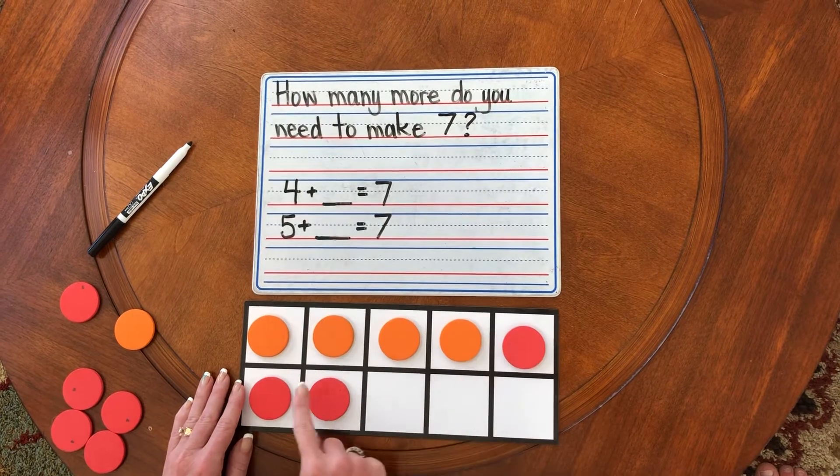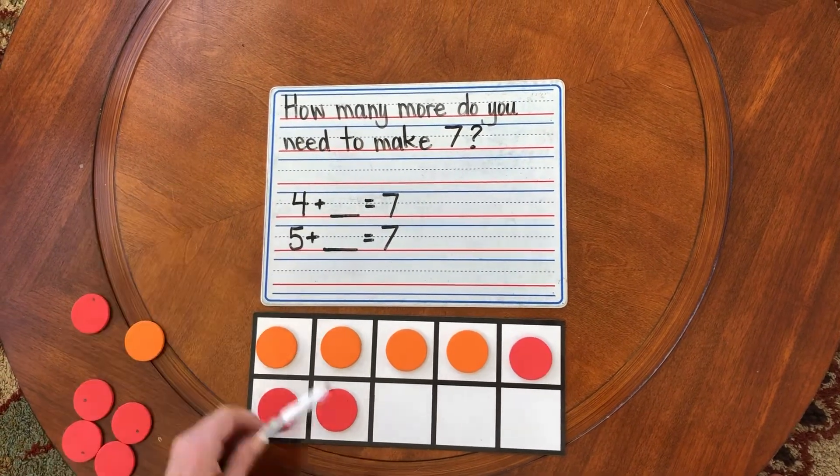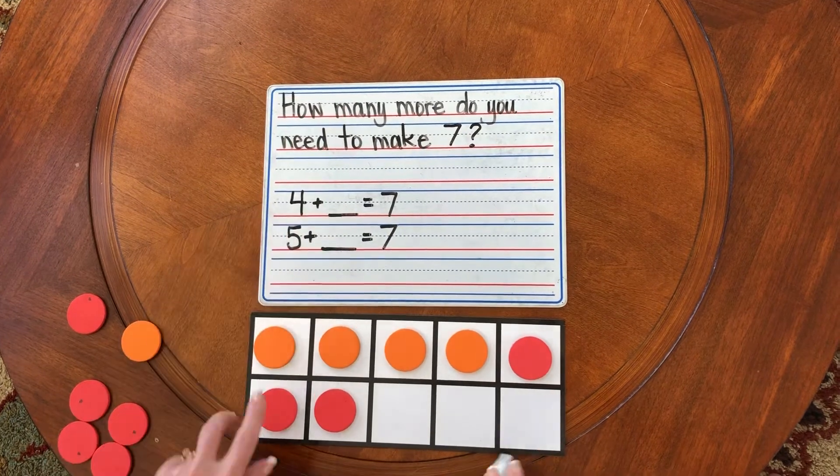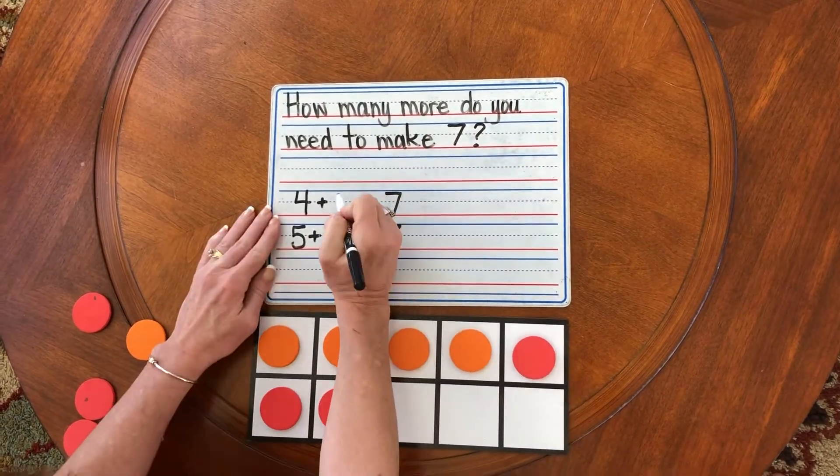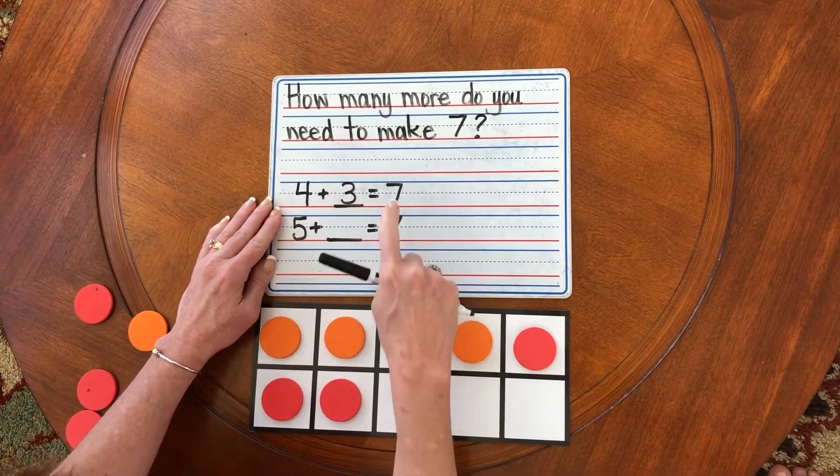How many red counters did we put all together to make seven? One, two, three. So now we know four plus three equals seven.